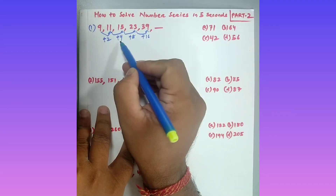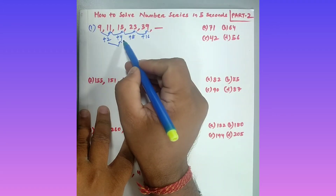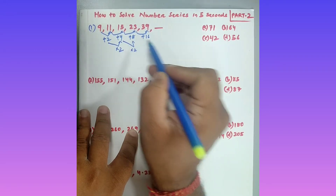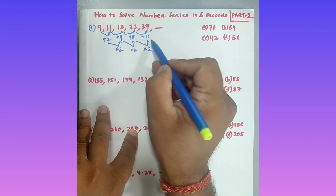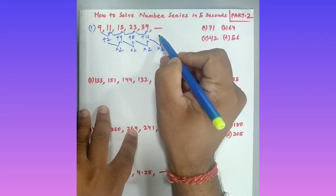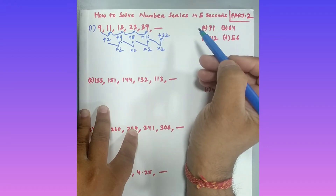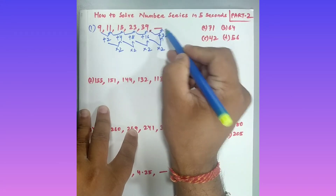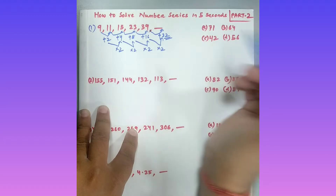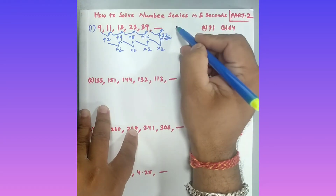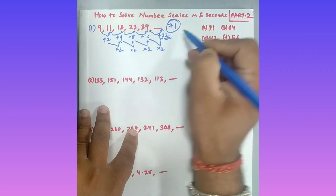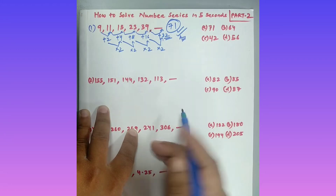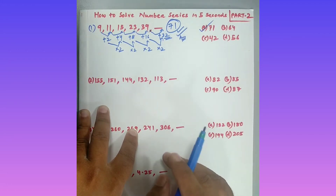The differences are 2, 4, 8, 16 — each multiplied by 2. So 2×2=4, 4×2=8, 8×2=16, and 16×2=32. So the next term is 39 plus 32, which equals 71. The answer is 71.